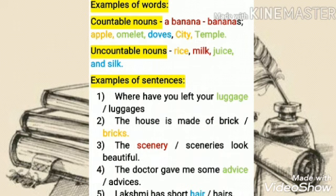The scenery looks beautiful — not 'sceneries.' Question 4: 'The doctor gave me some advice or advices?' — Advice. There is no word 'advices.' Question 5: 'Lakshmi has a short hair or hairs?' — Hair. Because hair has only singular form — there is no plural form for these kinds of words.